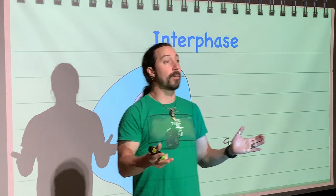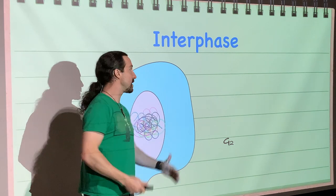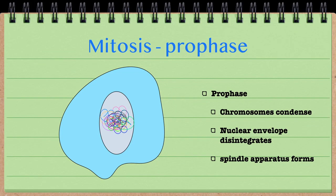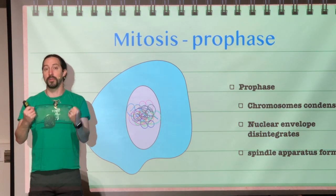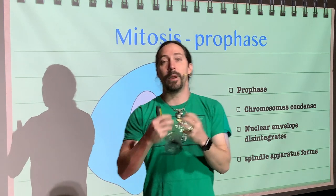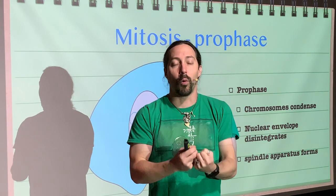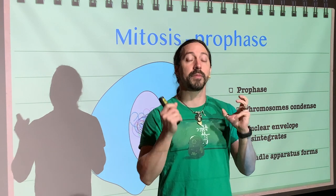The first part of M phase is mitosis, and the first stage of mitosis is prophase. This is what takes place during prophase: first, the chromosomes are going to condense, because it's very hard to separate out decondensed chromosomes — they would get tangled up and probably break. It would be very hard to, in an organized fashion, separate them out. So first, the chromosomes must condense.